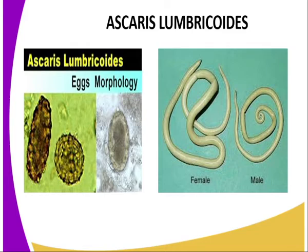The larva penetrate the intestinal wall and enter the bloodstream. They move to the liver and then to the heart and lungs. In the alveoli, they grow and molt twice. The larva then migrate up to the trachea where they cause irritation and so are coughed out and may be swallowed down into the esophagus, stomach, and small intestine where they finally mature into adults.